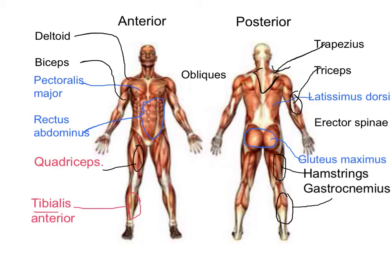The first of these is the erector spinae, which are the muscles up in the back here. It's easy to remember — erector means they help keep you upright, and the spine refers to them circling around the spine area.